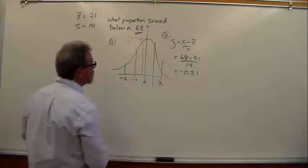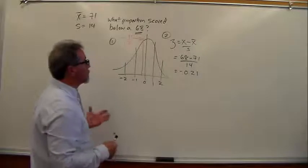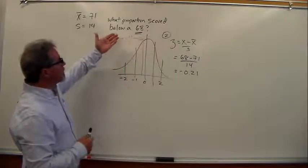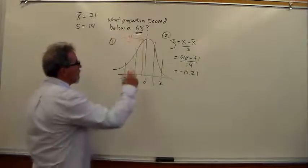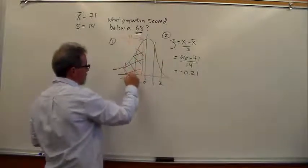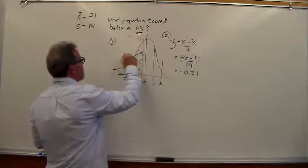Step four is shade. Now when you shade, I recommend you go back and you read the problem, make sure you don't shade the wrong area. What proportion of students in the class scored below a 68? So below is this way. So we want to shade this area here. So that's the area we're looking for.